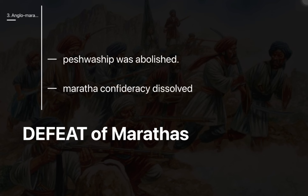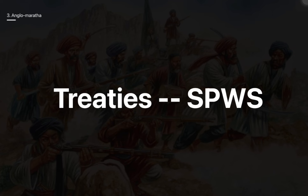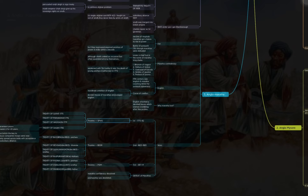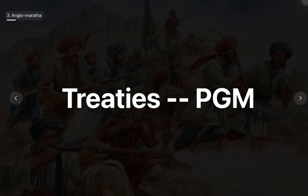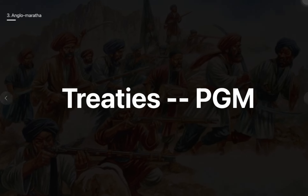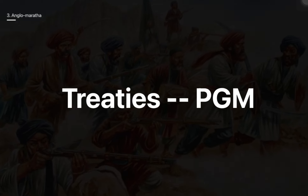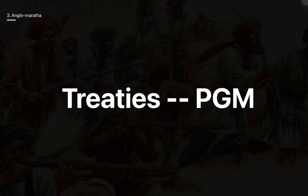To revise: First Anglo-Maratha War — SPWS: Treaty of Surat, Treaty of Purandhar, Treaty of Wadgaon, Treaty of Salbai. Second Anglo-Maratha War — BDSR: Treaty of Bassein, Treaty of Devgaon, Treaty of Surji-Anjangaon, Treaty of Rajpurghat. Third Anglo-Maratha War — PGM: Treaty of Pune, Treaty of Gwalior, Treaty of Mandasaur.